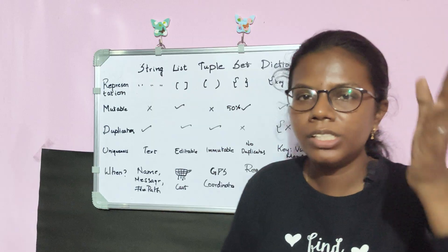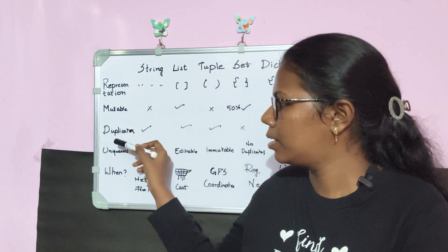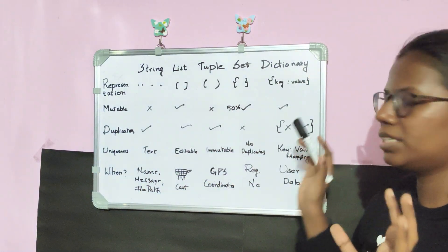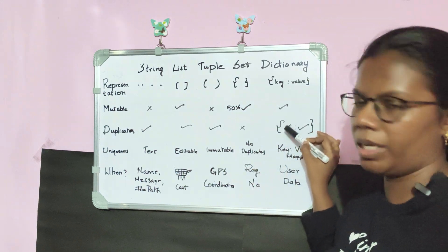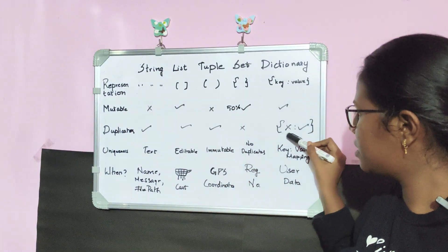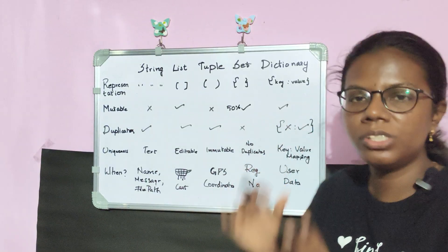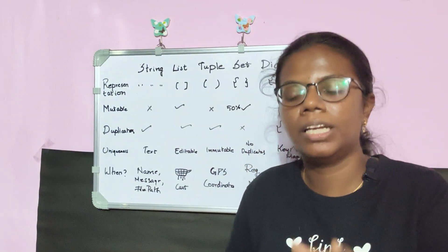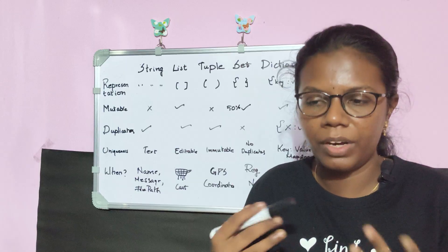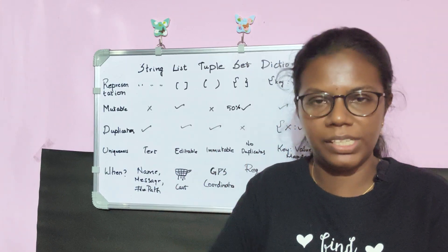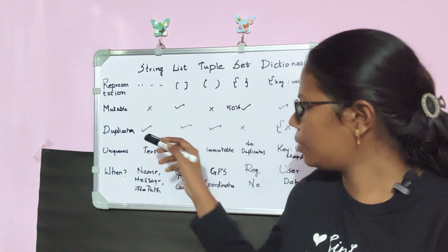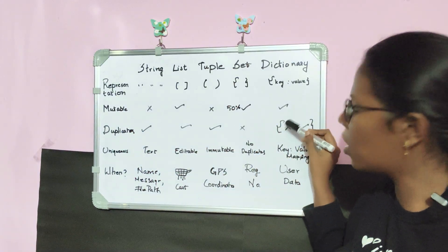Finally, for dictionary, it is 50% allowing duplicates. Keys of dictionary cannot have duplicates — if I am adding something to the left of the colon, I cannot repeat that specific key value. But for values, which are to the right of the colon, duplicates are allowed and can be repeated again and again. So duplicates are allowed for values and not allowed for keys. This is something you should remember — you can take notes on this.